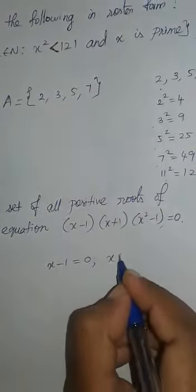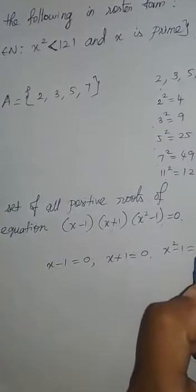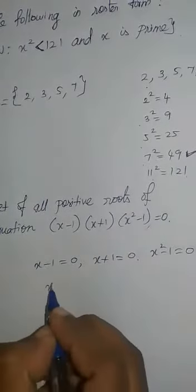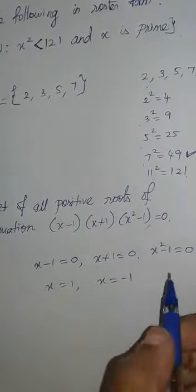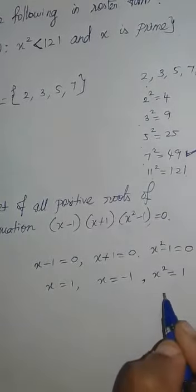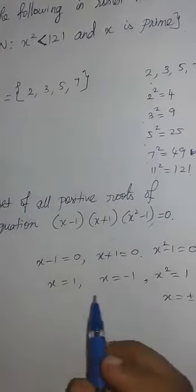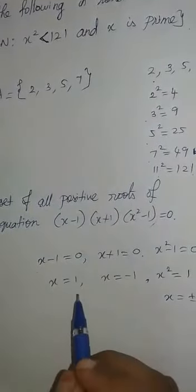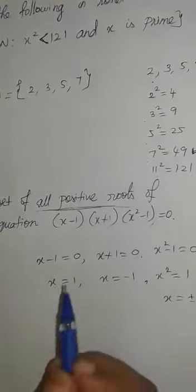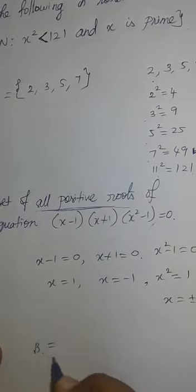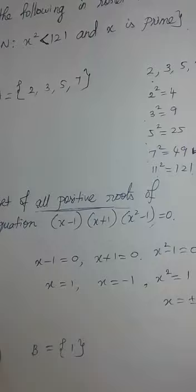Solving the equation: X minus 1 equals 0, X plus 1 equals 0, and X squared minus 1 equals 0. So X equals 1 or X equals minus 1. X squared minus 1 equals 0 gives X equals plus or minus 1. There are two solutions: 1 and minus 1. But the question asks for only the positive roots, so the answer set B contains 1 only.